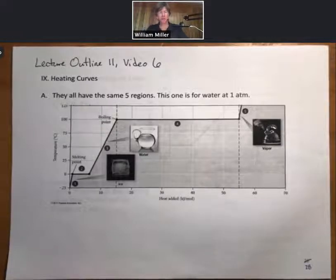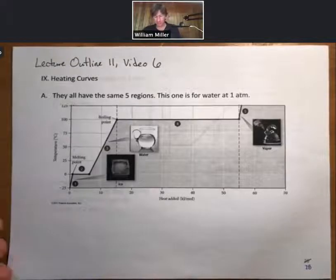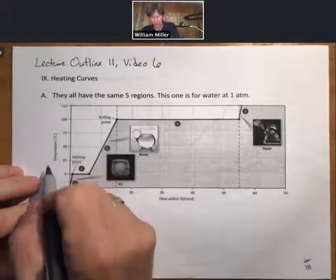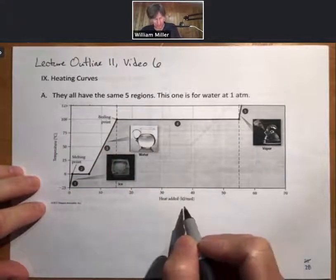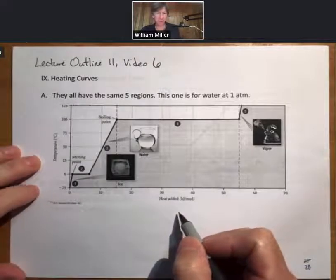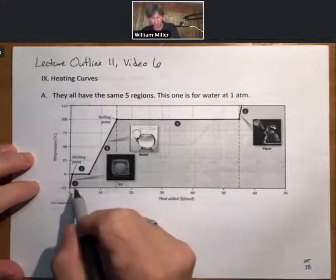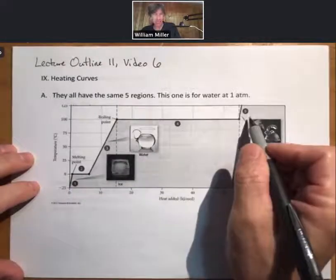This heating curve is for water at one atmosphere. And the y-axis is going to be temperature. The x-axis is going to be heat added in kilojoules per mole. And there are one, two, three, four, five regions.